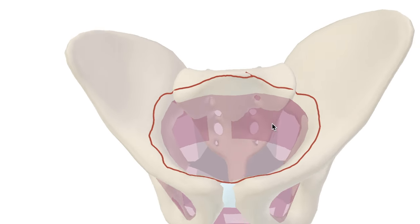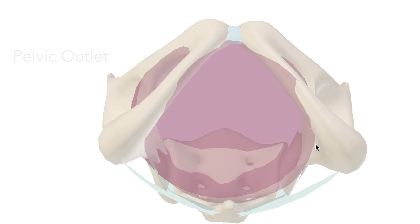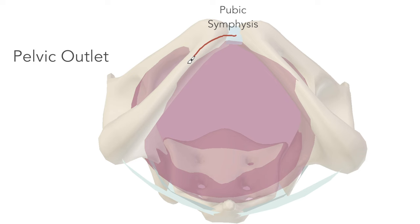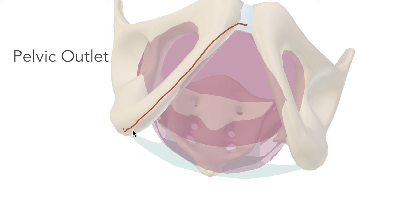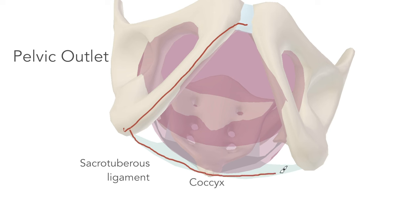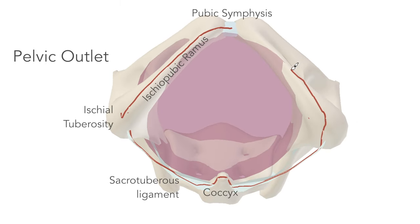Looking around the other side now, let's talk about the pelvic outlet. Starting at the pubic symphysis, then the ischiopubic ramus, the ischial tuberosities — and taking another angle to draw in the back part — the sacrotuberous ligament down the back, the coccyx, the sacrotuberous ligament, the ischial tuberosity, the left ischiopubic ramus, and back to the pubic symphysis.